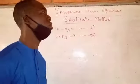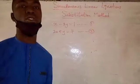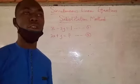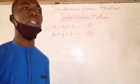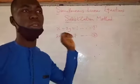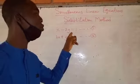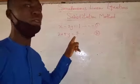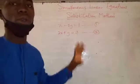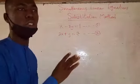We have different methods of solving simultaneous equations: we have the substitution method, we have the elimination method, and we can also solve simultaneous equations by the use of graphs. Today we are going to take a look at the substitution method. When you have two equations like x minus 2y equals 1 and 2x plus y equals 7, these are what we call simultaneous equations.